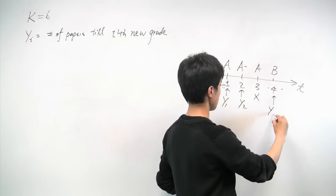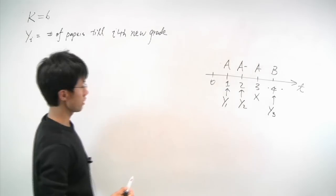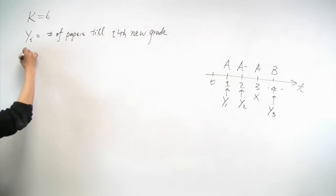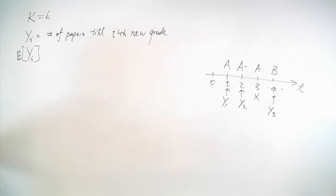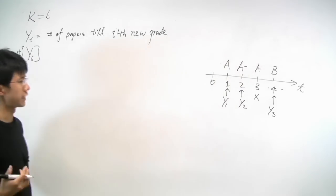And the third time we saw a new grade will now be paper 4. According to this notation, we're interested in knowing what is the expected value of y6, which is the time it takes to receive all six grades. So far, this notation isn't really helping us in solving the problem, but kind of just restating it a different way.